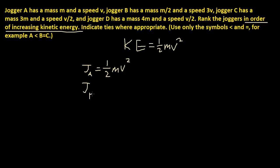Jogger B. Jogger B has 1 half mv squared. What's Jogger B's mass? M over 2. So m over 2, m over 2. Which is 3v. 3v squared.